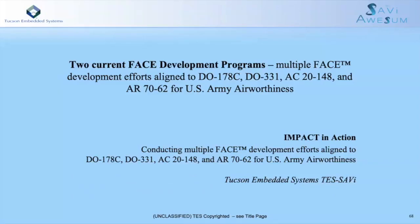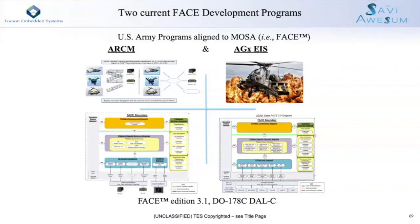We want to jump into the description of two phase development efforts. Pictorially, with the phase architectures, we have the Arkham project on the left and the AGX EIS. Arkham is the Army's Aviation Radio Control Manager, and the AGX is an Aircraft Gateway — with the X representing next generation — and EIS is the External Interface Systems. Side by side, we have a comms domain on the left and aircraft survivability equipment onto platforms. We have the FACE diagrams visible in the images below. The devices we're going to control include several radios on the left and aircraft survivability on the right.